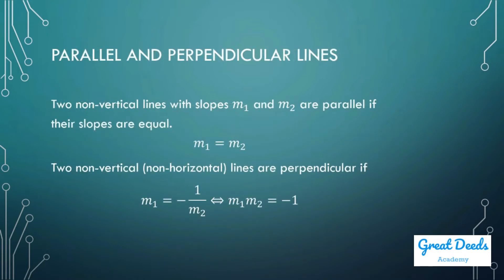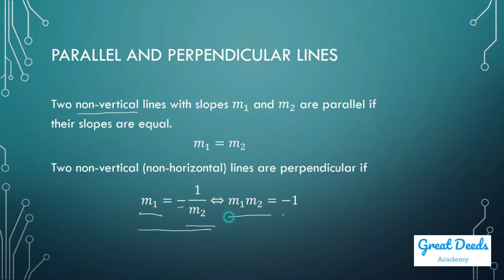Parallel and perpendicular lines. Two non-vertical lines with slopes m₁ and m₂ are parallel if their slopes are equal. The qualification non-vertical is necessary because vertical lines have undefined slopes. Two non-vertical, non-horizontal lines are perpendicular if the slope of one line equals the negative reciprocal of the other. Equivalently, the product of the two slopes equals negative 1.